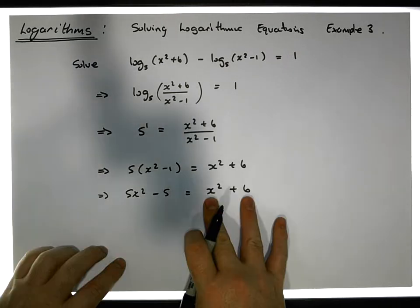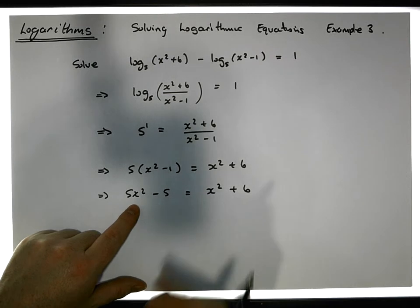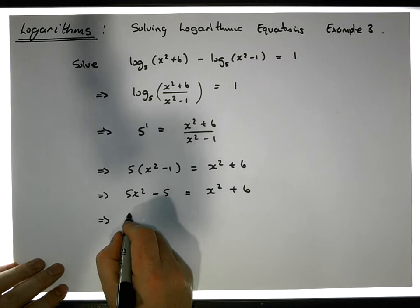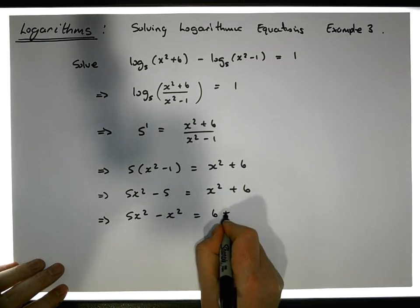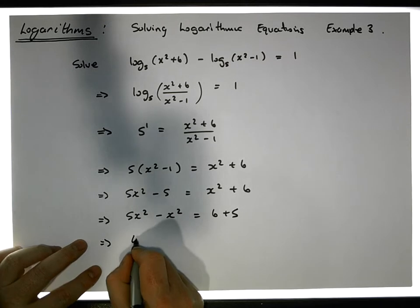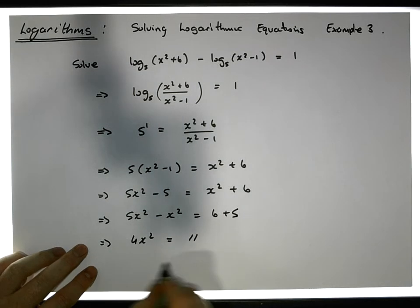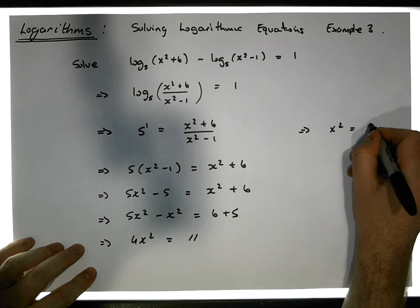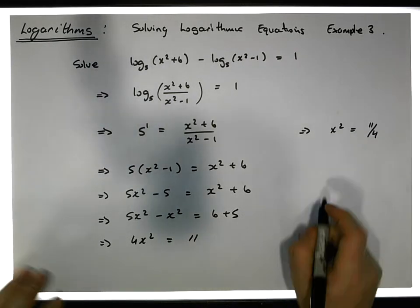Gathering all the terms on one side — bringing the x terms over and the constant terms over — this becomes 5x squared minus x squared is equal to 6 plus 5, which implies that 4x squared is equal to 11.